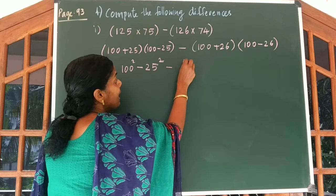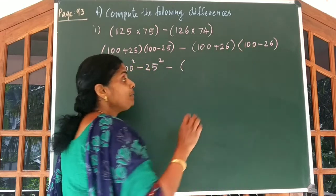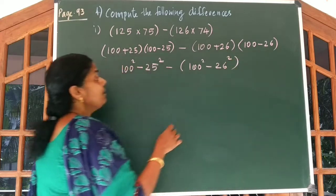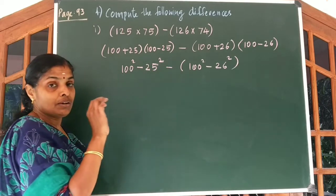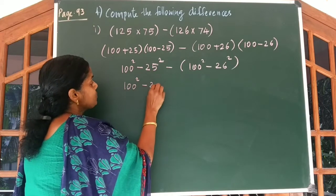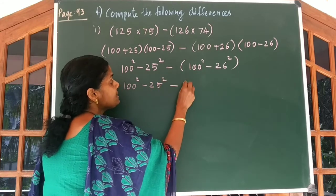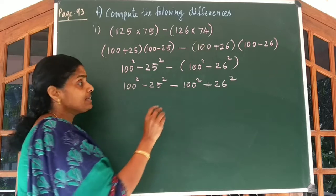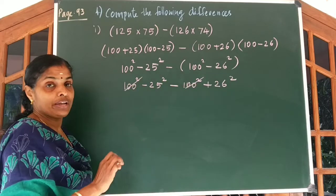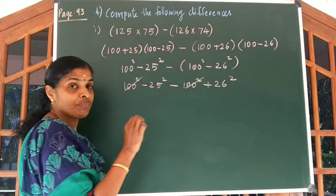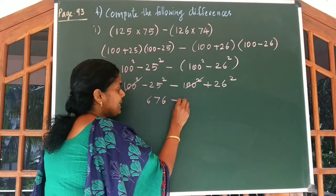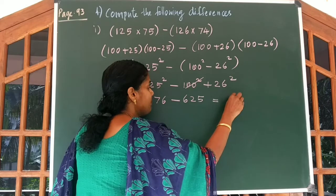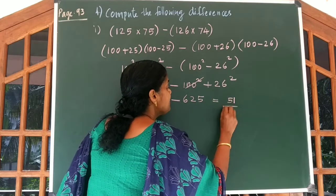Now we subtract: 126 can be written as 100 plus 26, and 74 as 100 minus 26, giving 100 square minus 26 square. Removing the minus sign, we get 100 square minus 25 square minus 100 square, and minus of minus gives plus 26 square. The 100 squares cancel, leaving 26 square minus 25 square, which is 676 minus 625, giving the answer 51.